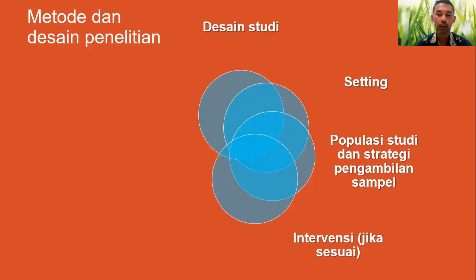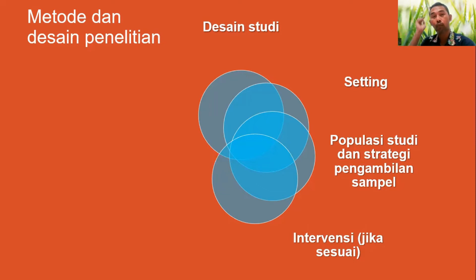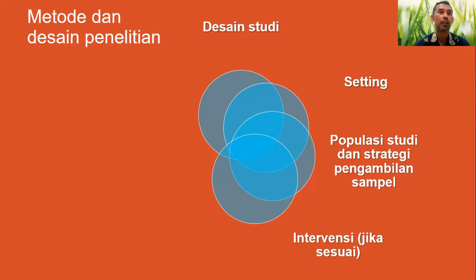Kita perlu memikirkan intervensi jika ini sesuai. Biasanya ada intervensi atau kelompok pembanding, dan jika ada intervensi kita perlu menjelaskannya secara rinci beserta apa yang dilakukan pada kelompok pembanding. Ini biasanya dilakukan di penelitian seperti PTK atau penelitian eksperimen, di mana kita melakukan tindakan pada satu kelompok dan kelompok lain diberikan perlakuan yang berbeda.